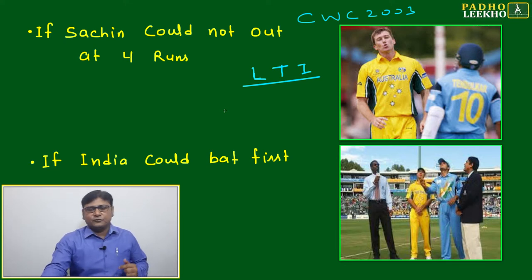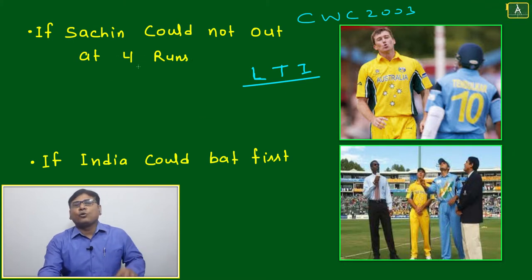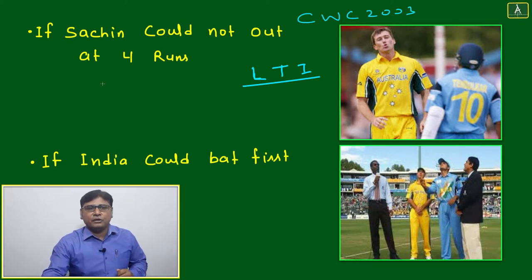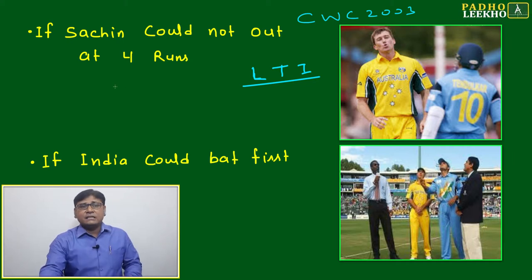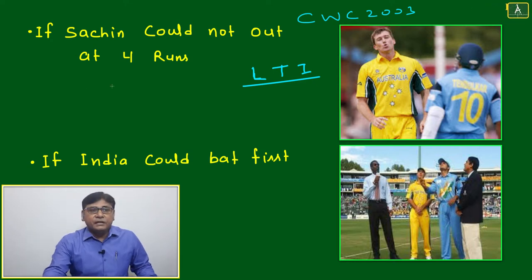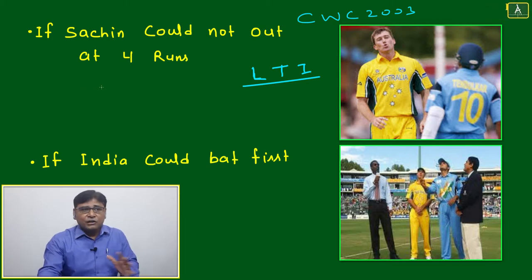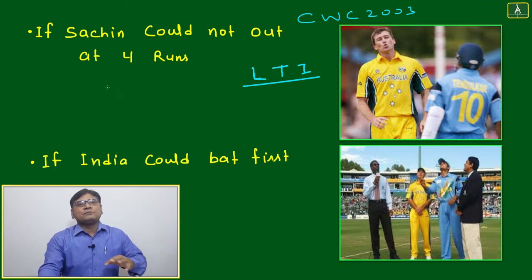I will explain this mathematically in the next few minutes. Just think: if Sachin could not have been out at four runs — he hit one boundary against Glenn McGrath and on the very next ball gave a catch — if Sachin had not been dismissed at four runs, then India might have won the World Cup. May not, might not be — it is not confirmed. But people are thinking: if Sachin had not been out, India could have won.